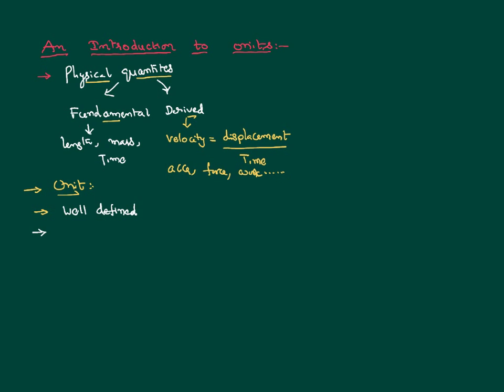A unit shall be easily reproducible. For example, you define a meter — you shall have a way of reproducing the meter easily to a large extent, so that it can be available for everybody in the world. It shall be easily reproducible. It shall not be destructible, and it has to be available for everybody.